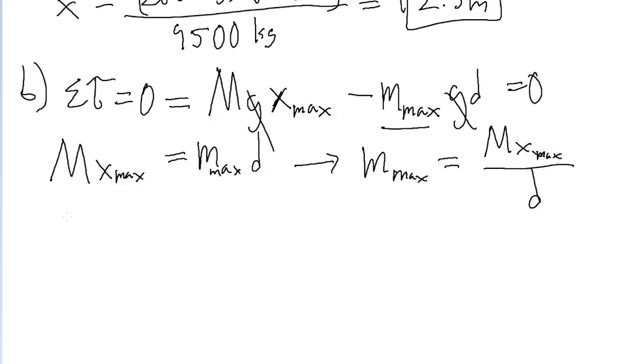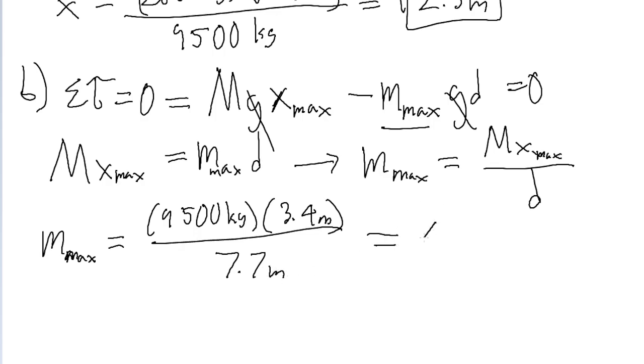Okay, now all we got to do is plug our values into the calculator. So again, m sub max. So the big M, that didn't change. It's just 9,500 kilograms. The x sub max, that's the fullest extent, which we discussed earlier. We can see from the diagram it is 3.4 meters. And all this is being divided by 7.7 meters once again. Put this into a calculator and we find a mass of 4,200 kilograms. And that is our answer for part B.